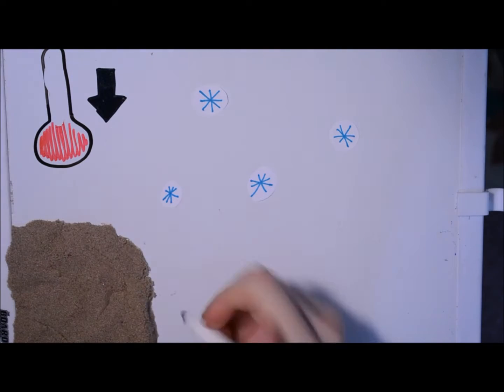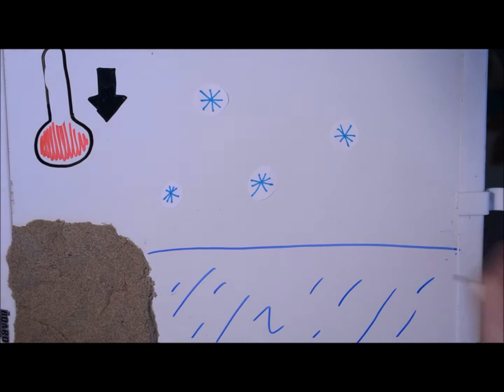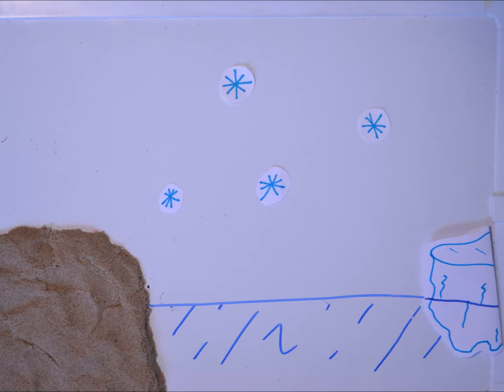Because the temperatures dropped, ocean levels decreased and water froze. Glaciers were constantly growing and shrinking.